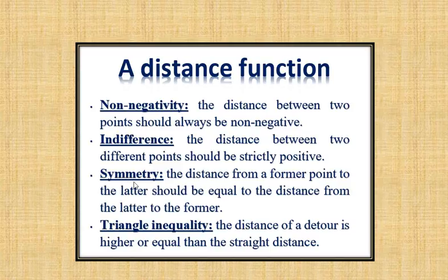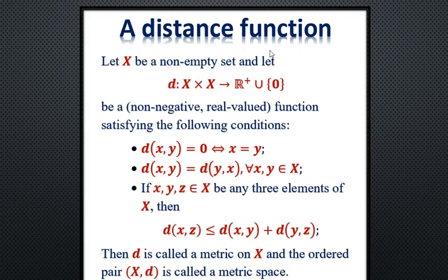Another important concept is symmetry: the distance from point A to point B should be the same as the distance from point B to point A. The shortest distance from A to B should equal the shortest distance from B to A. And of course the last property is the triangle inequality, which we know is important when working with vectors. These are the four properties we want our function to satisfy.